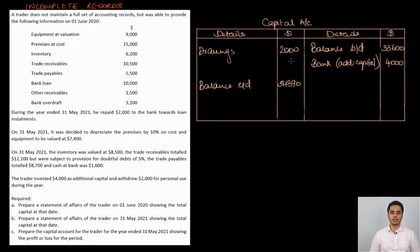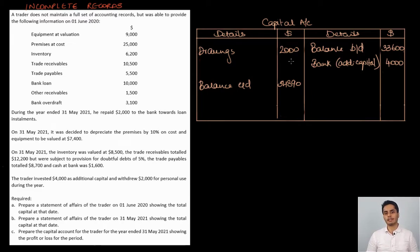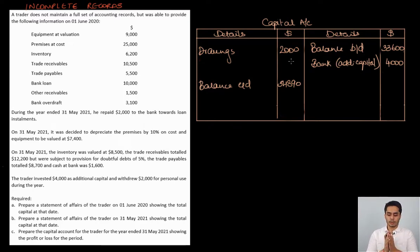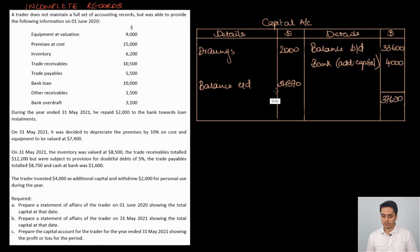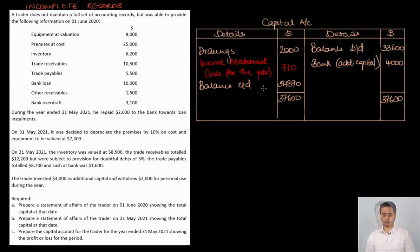Once these transactions are recorded, the net balance in the capital account will indicate either profit or loss. If the credit total is greater than the debit total, it is a loss for the year; if debit is greater than credit, it is a profit. Here the credit total is 37,600 and the debit total is 36,890, so the credit is greater, meaning it is a loss. Balancing the account gives us a loss of 710 for the year.